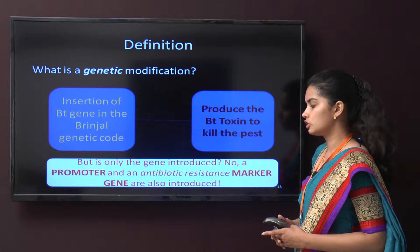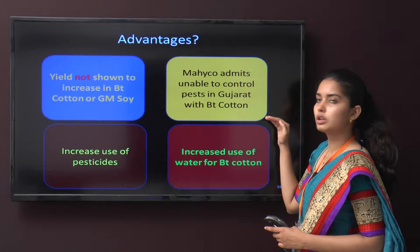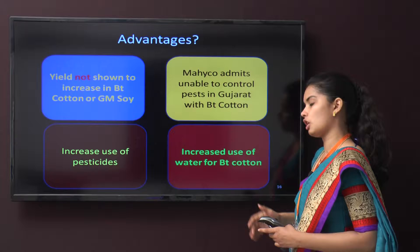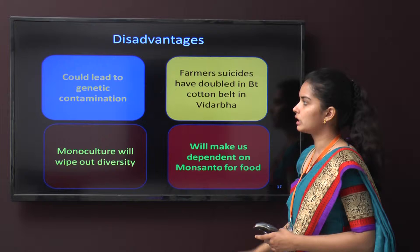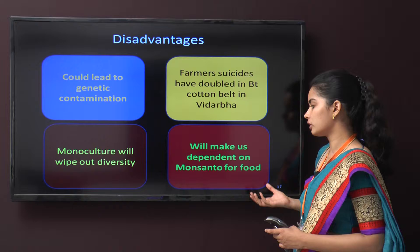Advantages of BT Cotton include pest resistance; however, yield has not been shown to increase. Monsanto admits being unable to control pests in Gujarat with BT Cotton, and there is increased use of pesticides and water. Disadvantages include the risk of genetic contamination, farmer suicides having doubled in the BT Cotton belt in Vidarbha, and monoculture wiping out diversity, making us dependent on companies like Monsanto for food.